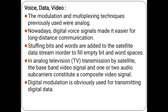Voice, Data and Video: The modulation and multiplexing techniques previously used were analog. Nowadays, digital voice signals have made it easier for long-distance communication. Shuffling bits and bytes are used in the satellite data stream in order to fill empty bit and byte spaces. In analog transmission such as TV by satellite, the baseband signal and one or more audio subcarriers constitute a composite video signal. Digital modulation is used for transmitting digital data.